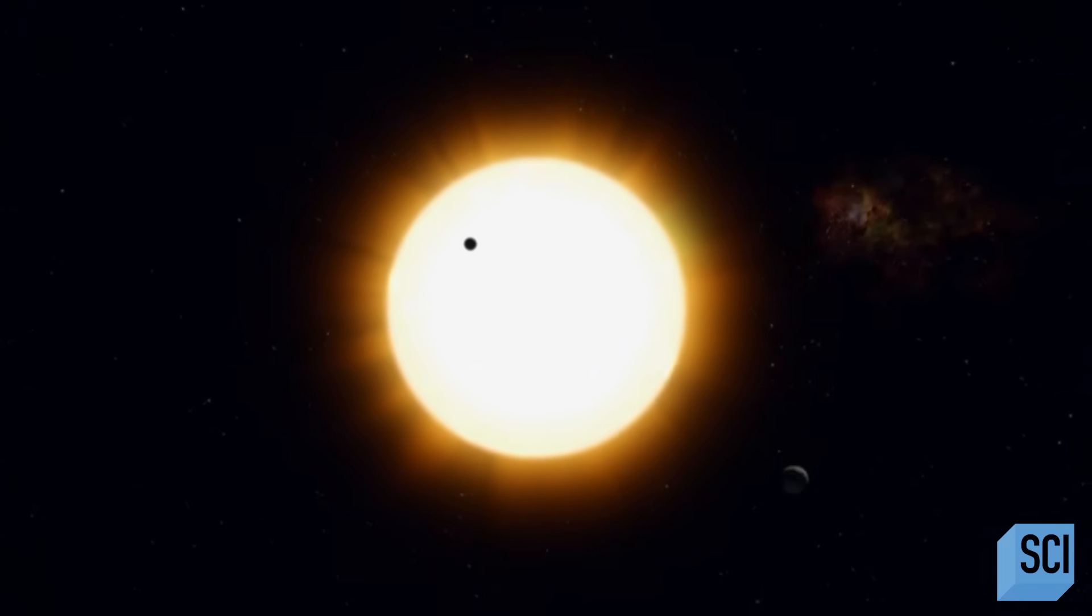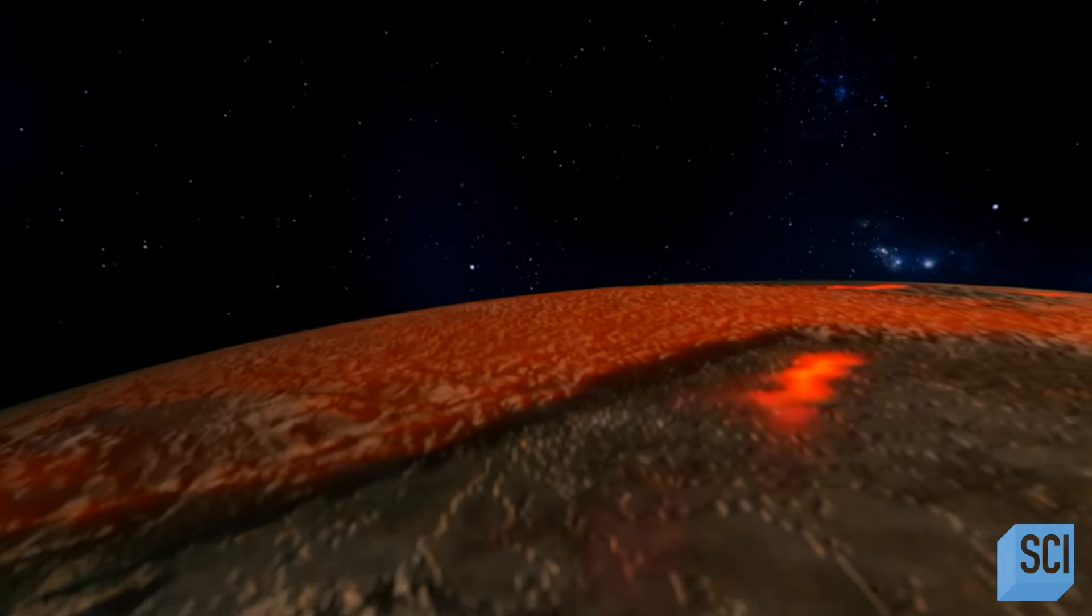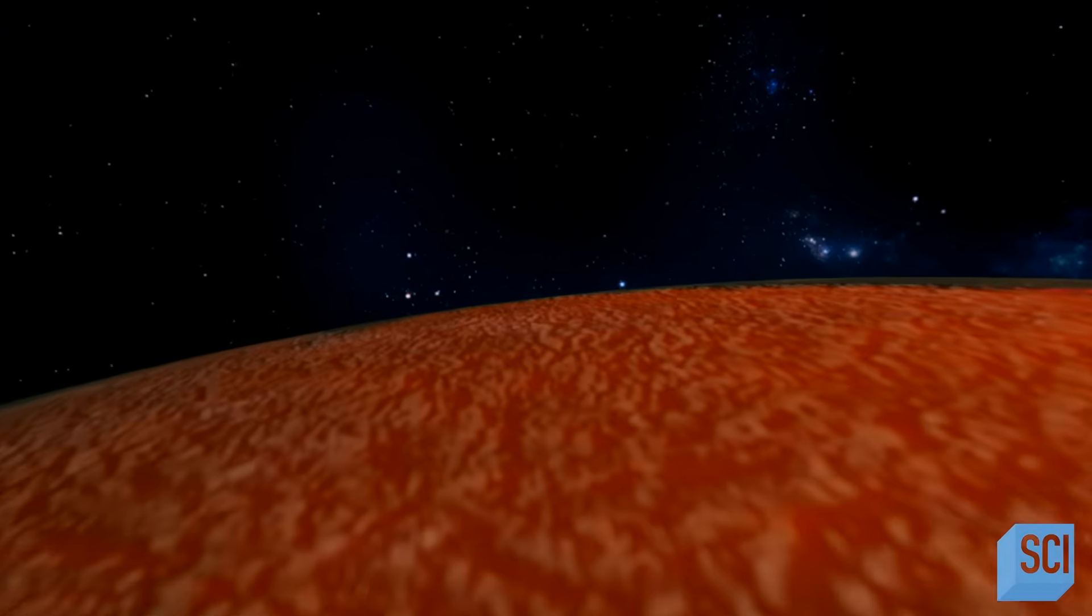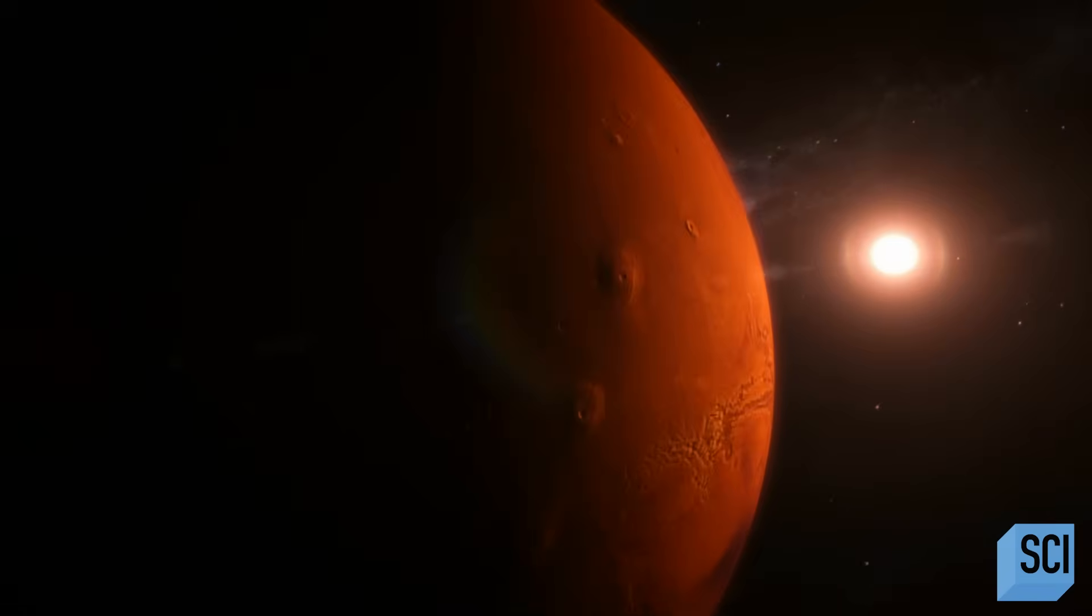Today, large super-Earths are nowhere to be seen in our solar system. But if we did have them, where did they go? And how did the Earth and other rocky planets come to take their place?